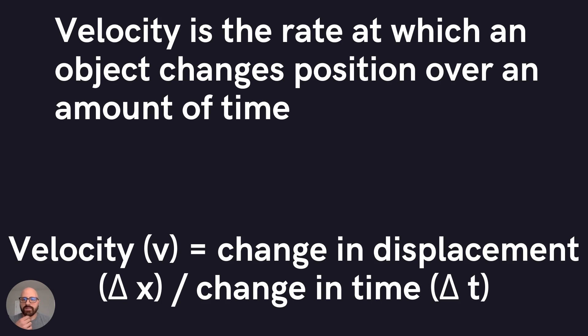So what is velocity? Velocity is the rate at which an object changes position over an amount of time. It's change in displacement, and we'll talk about that here in a second. It's change in displacement over change in time. Velocity is what's known as a vector quantity, meaning it has both magnitude and direction. So how much and in what direction.